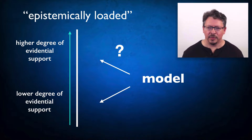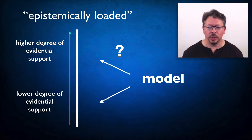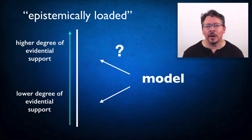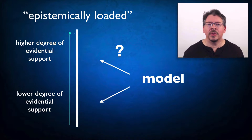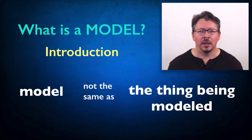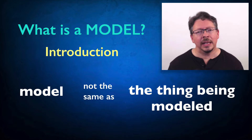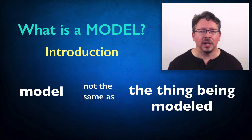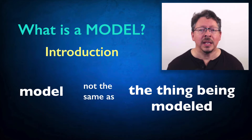I think it's more accurate to say that the term 'model' has a set of epistemically neutral uses that suggest a different way of thinking about epistemic support — about what it means for a model to be good or bad. Because models are supposed to be different from the things they're used to represent. There's a difference between a model and the thing being modeled, and that difference has more to do with concepts like abstraction, idealization, simplification, and the usefulness of representing systems in this way.